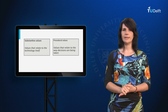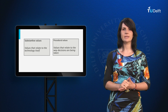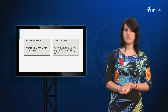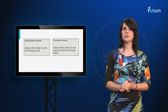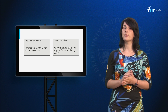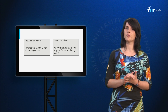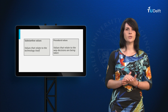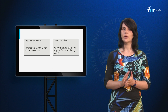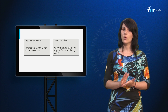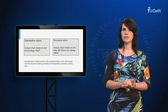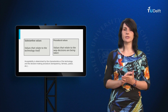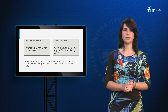Procedural values refer to the way decisions are being taken and projects executed. Literature in the field of science and technology studies shows how responses to new technologies are largely determined by the process through which publics are informed and involved. This means that the acceptability of a new energy project is determined not only by the characteristics of the technology, but also by the characteristics of the decision-making procedure. This refers to values such as transparency, fairness and procedural justice.